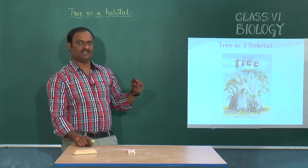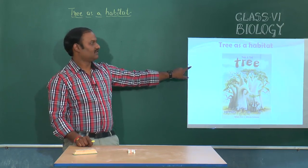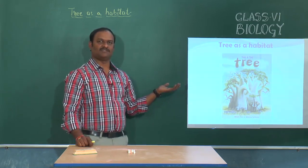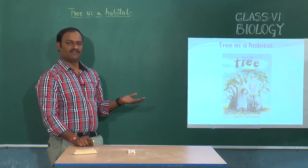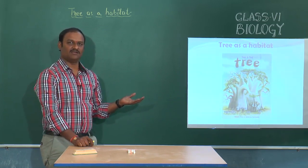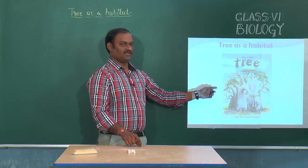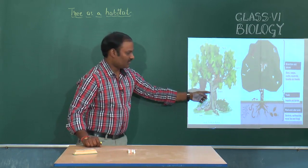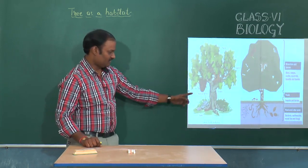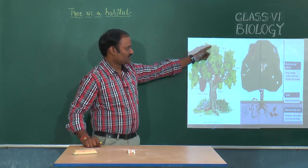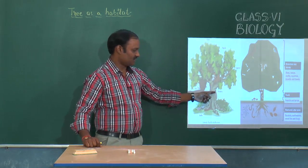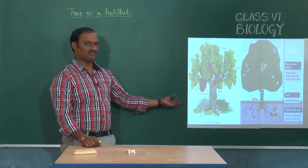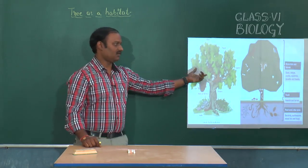In terrestrial habitats, the first habitat is tree as a habitat. We may see different types of trees in our surroundings. If you observe a tree, there are different types of organisms living on a tree — honey bees, crows, parrots, squirrels, monkeys, snakes, earthworms, etc. These are the different types of organisms which are living on the tree.